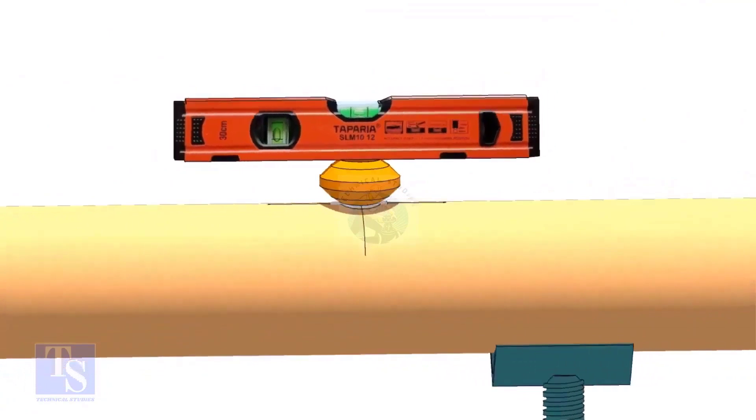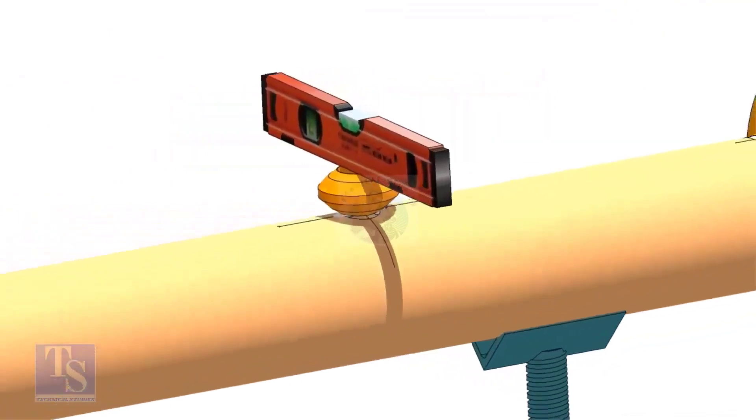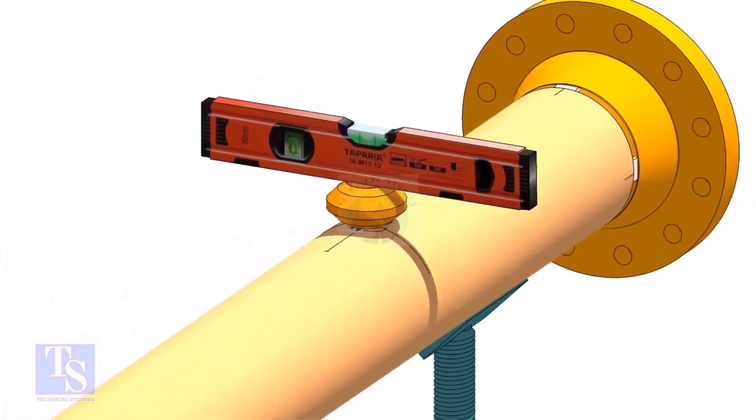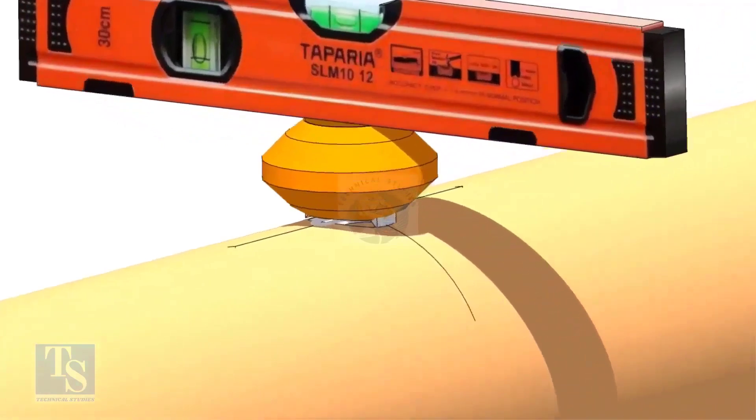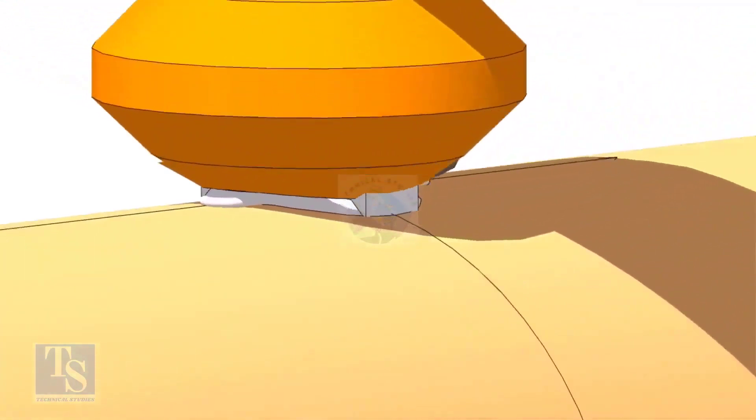Check the level from both sides. Tack weld on the sides of the OLED. Remove the gap rod and check the level again.